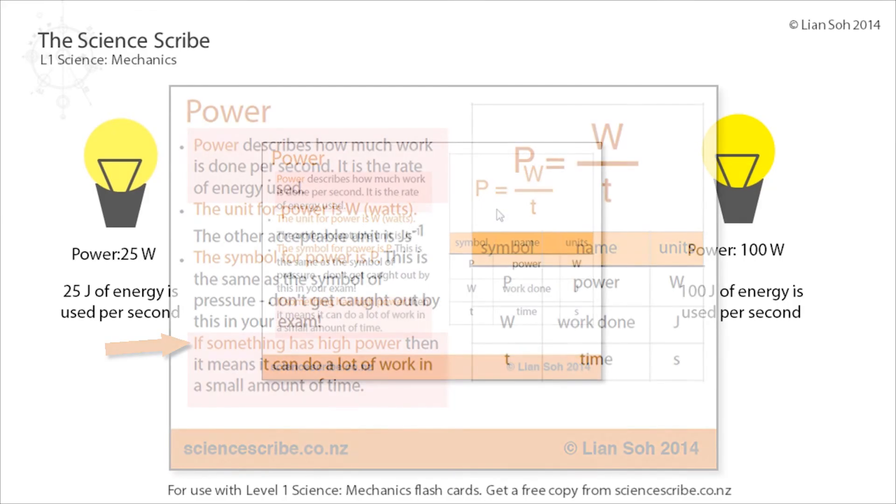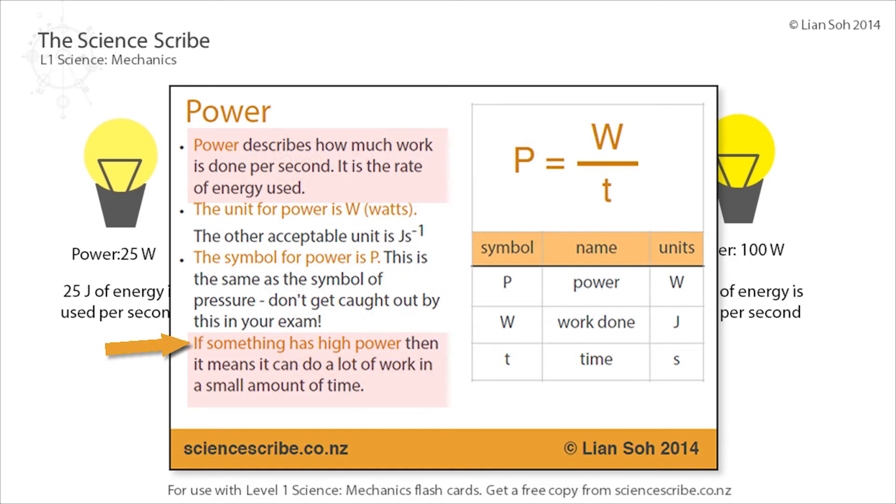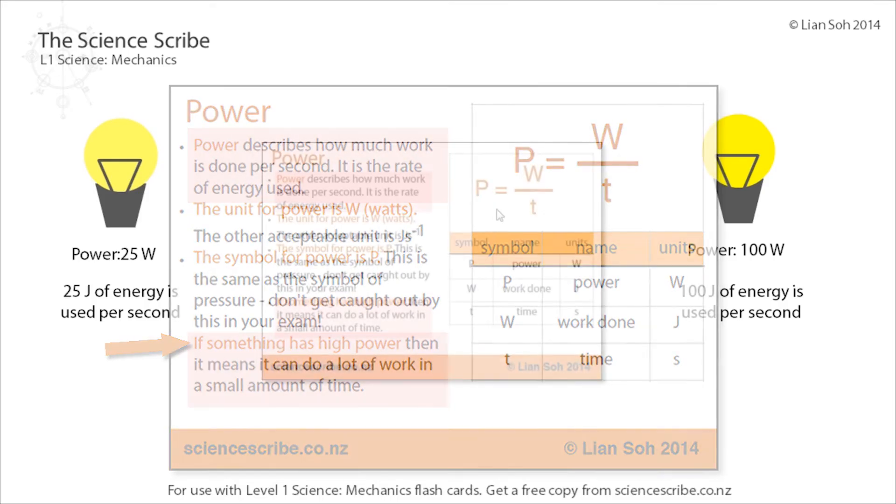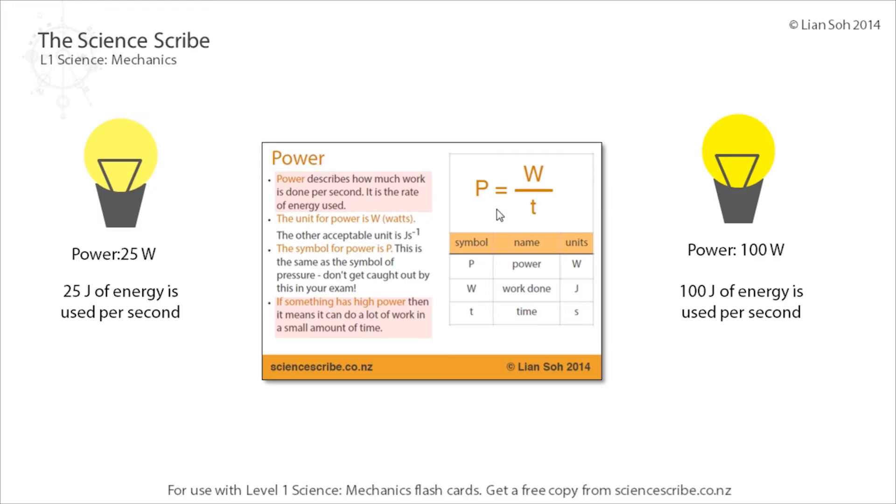Now remember, if something has a higher power it means it can do a lot more work in a smaller amount of time. The light bulb on the right has 100 watt power compared to the one on the left which is just 25 watts, so the 100 watt light bulb is able to do a lot more work in a smaller amount of time.